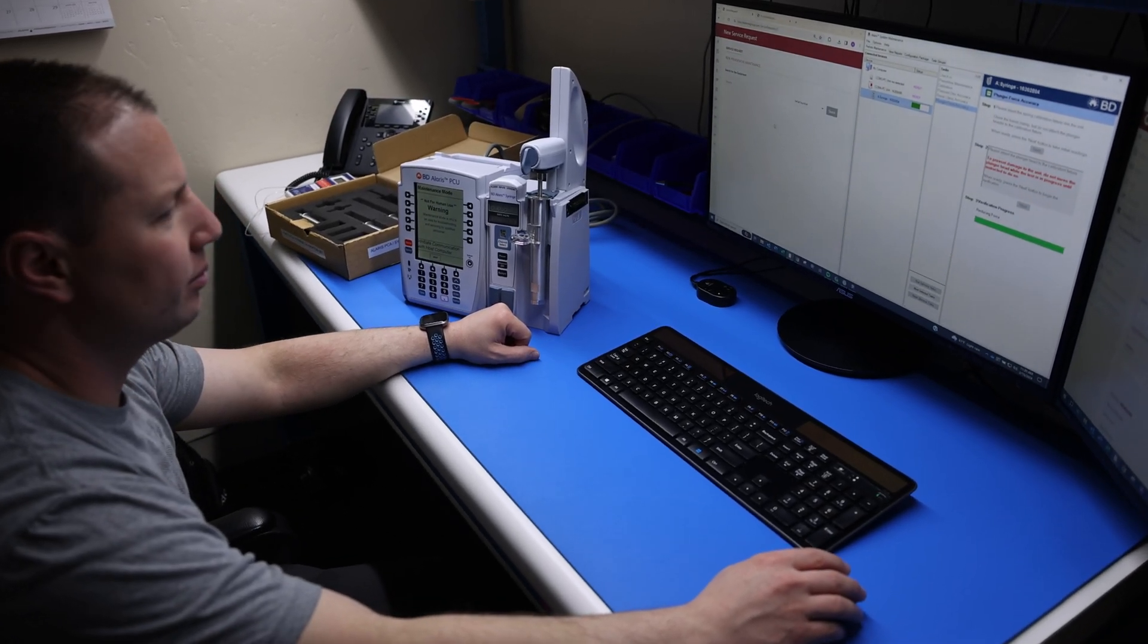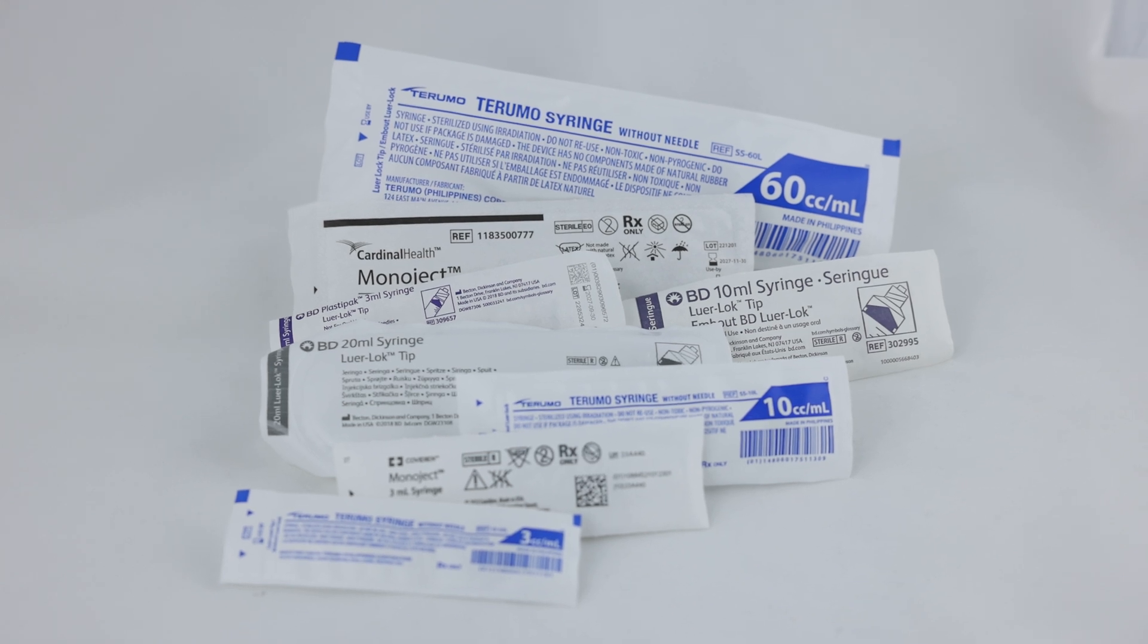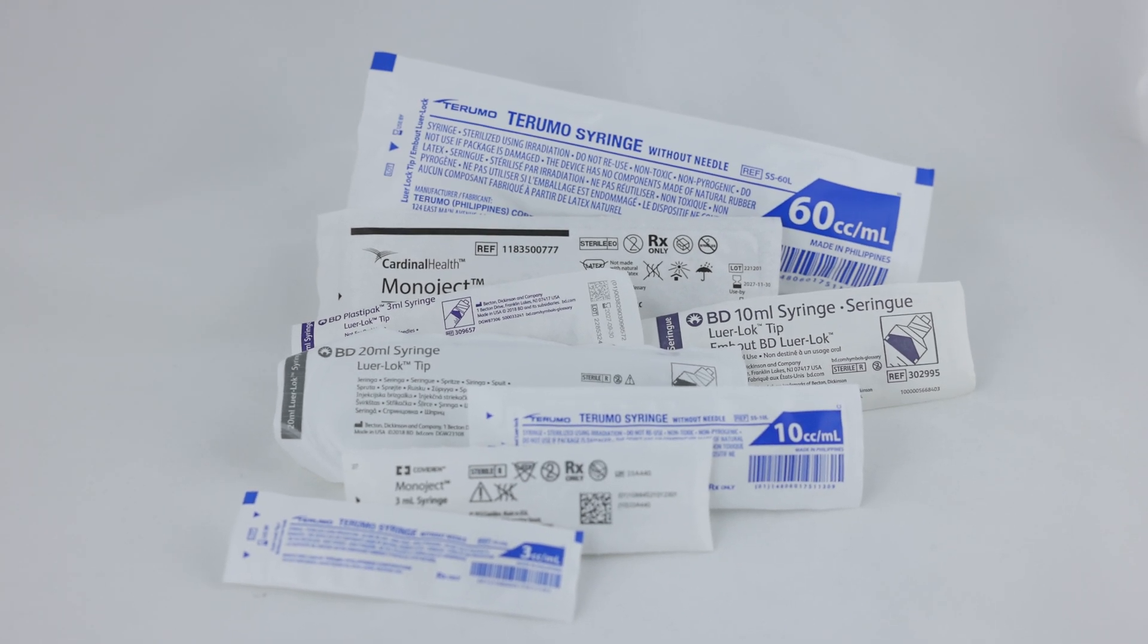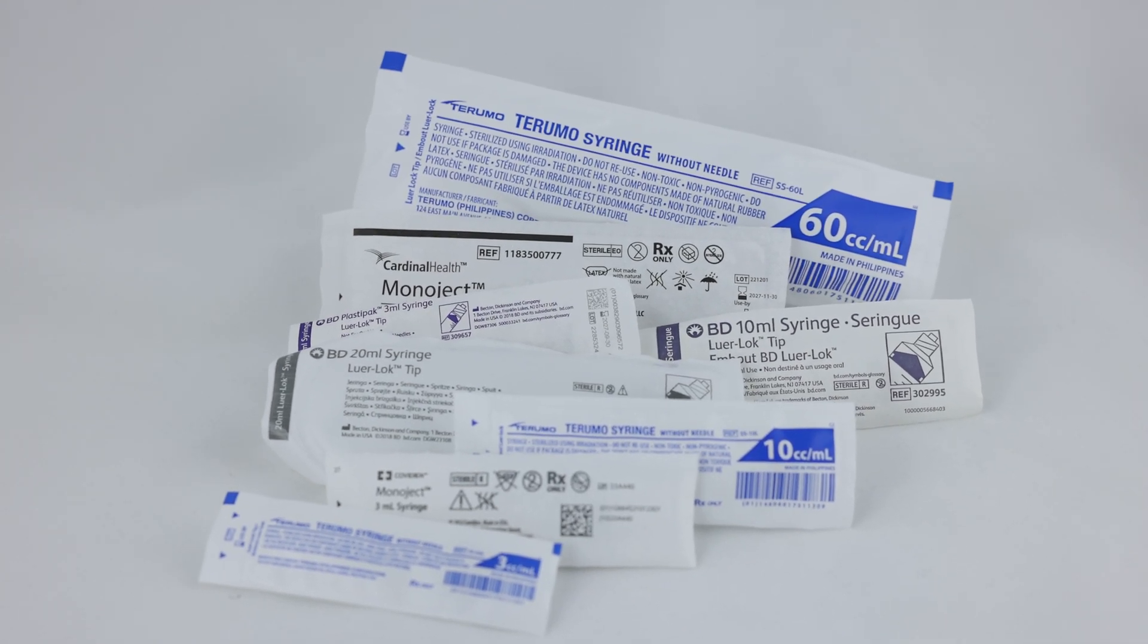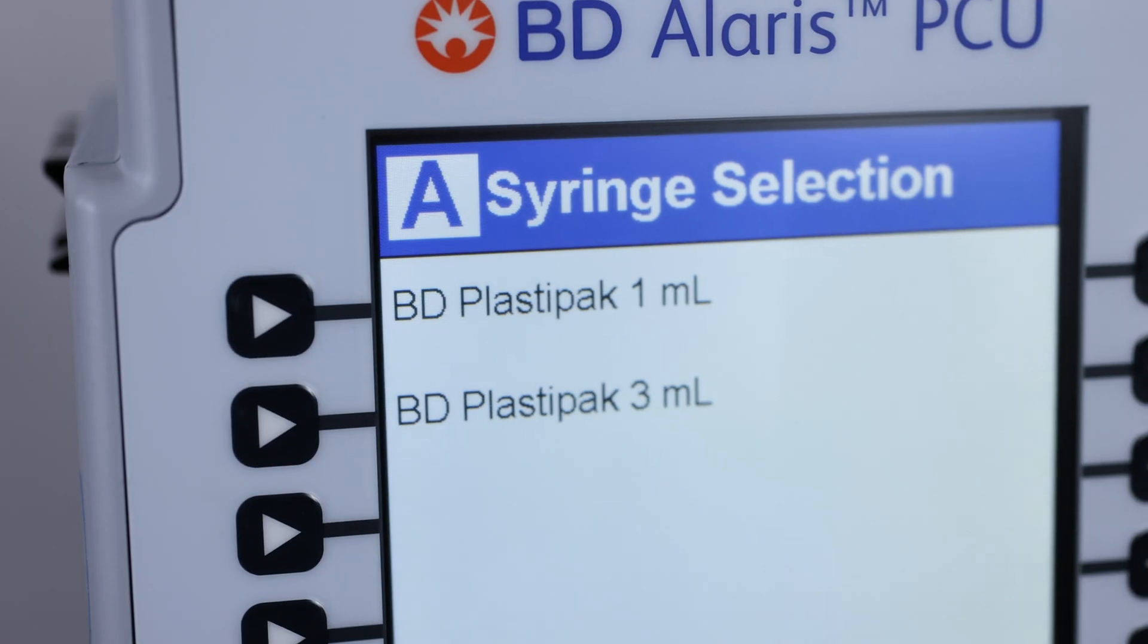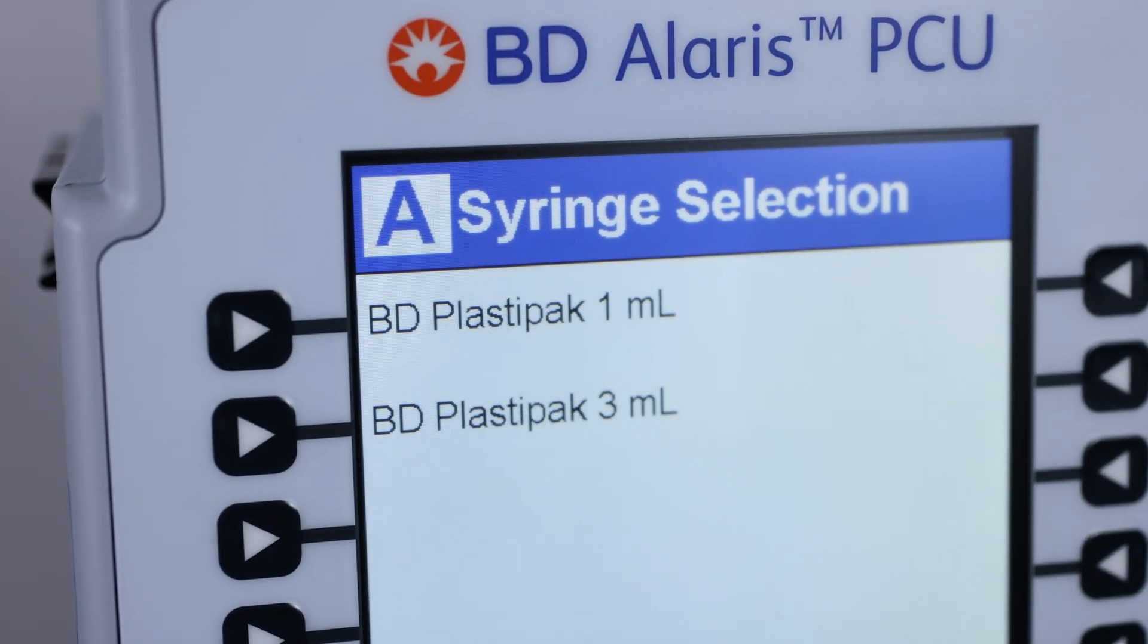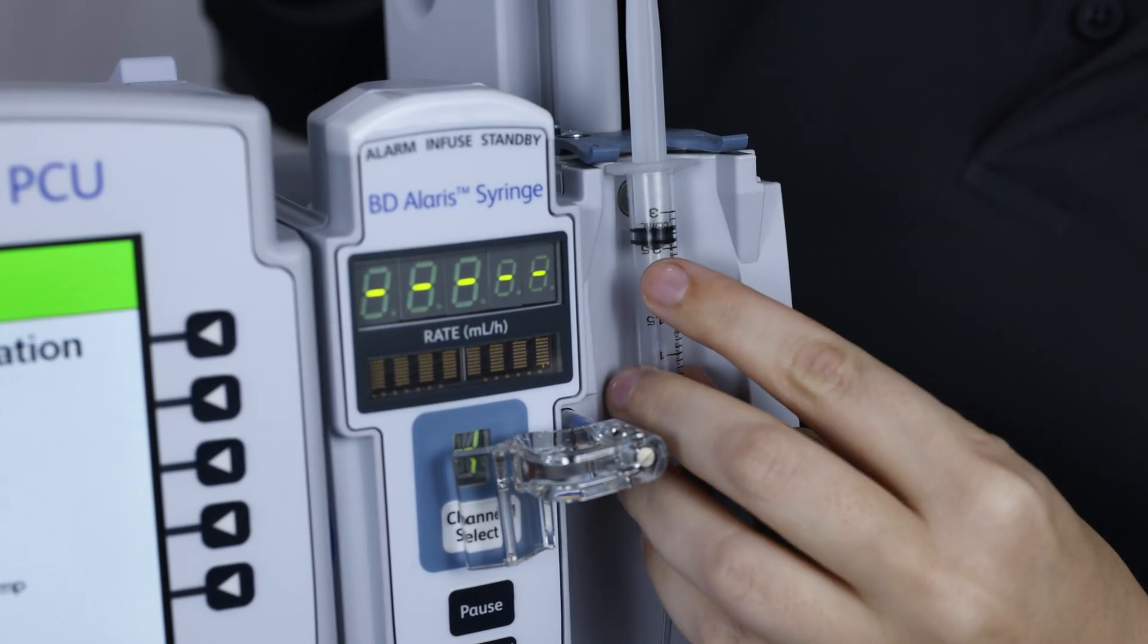Acceptable syringes to use with the 8110 syringe module include those manufactured by BD, Monoject, and Terumo, ranging in size from 1 milliliter to 60 milliliters. The pump module has an auto-detect barrel clamp that senses the size of compatible syringes.